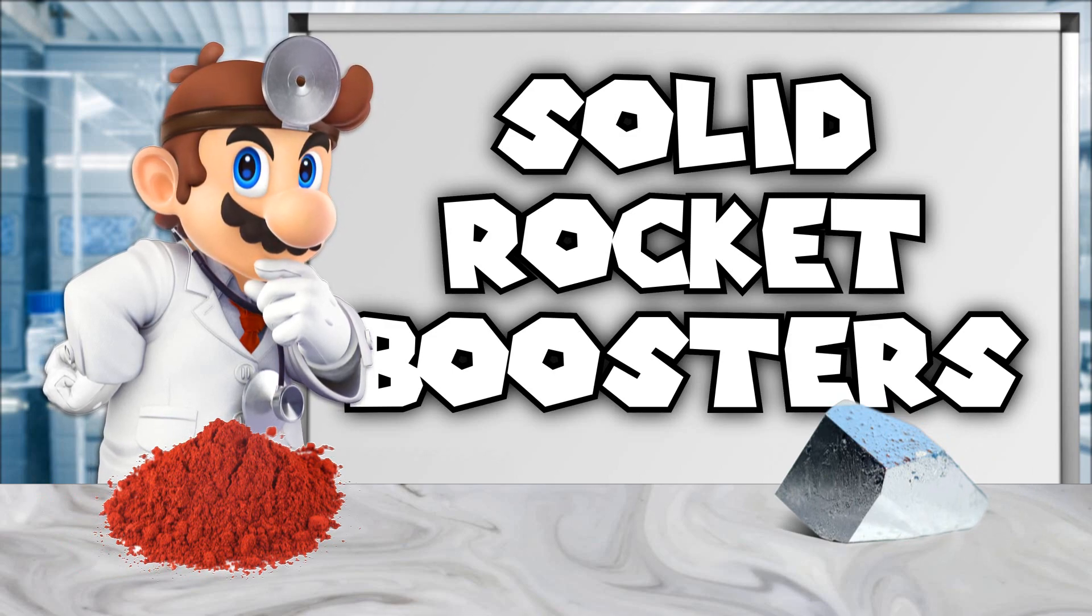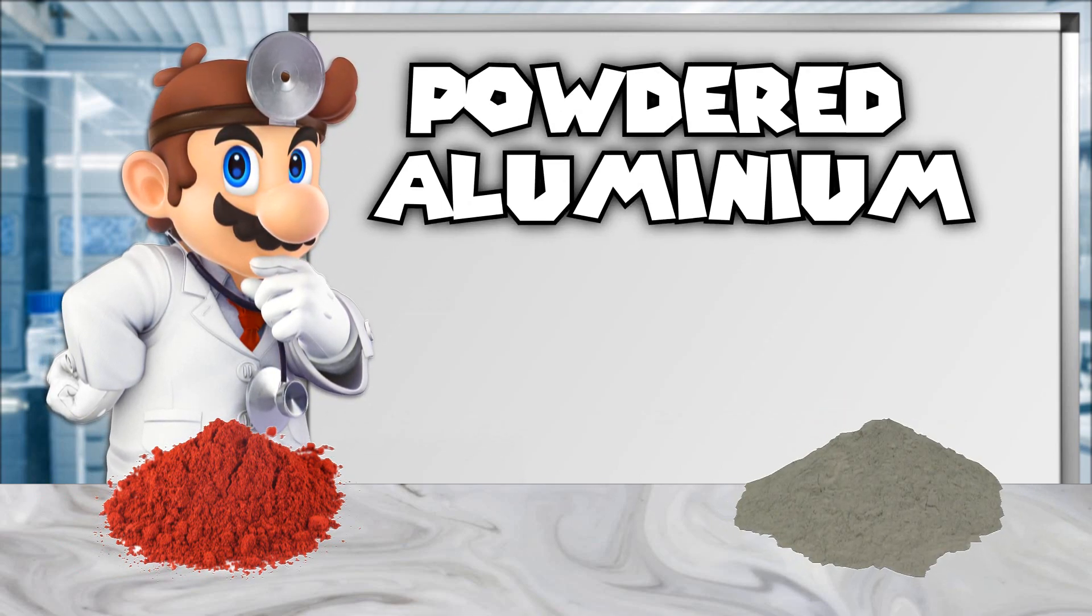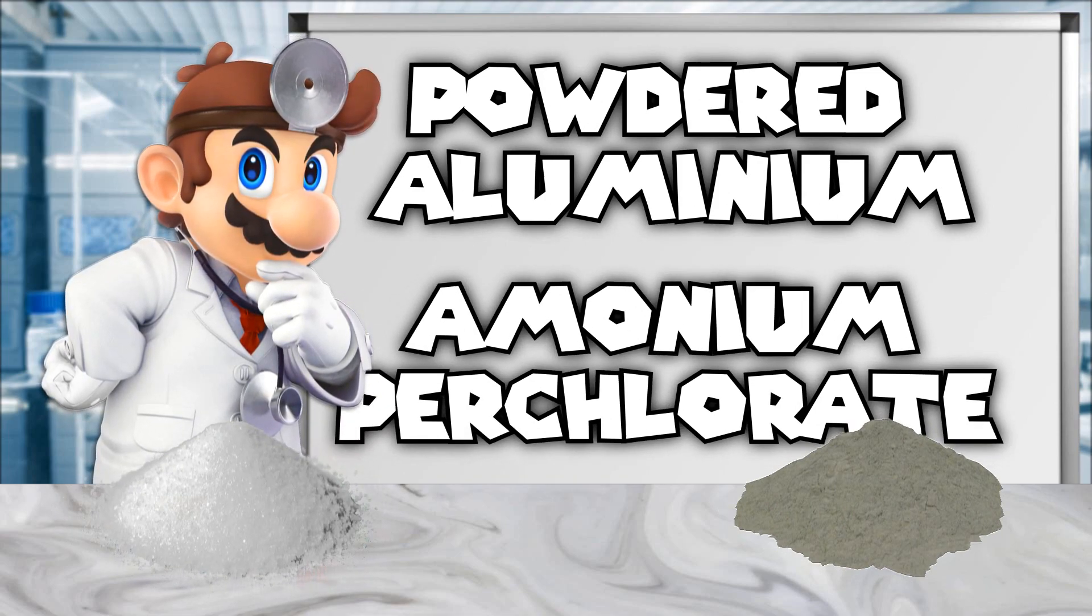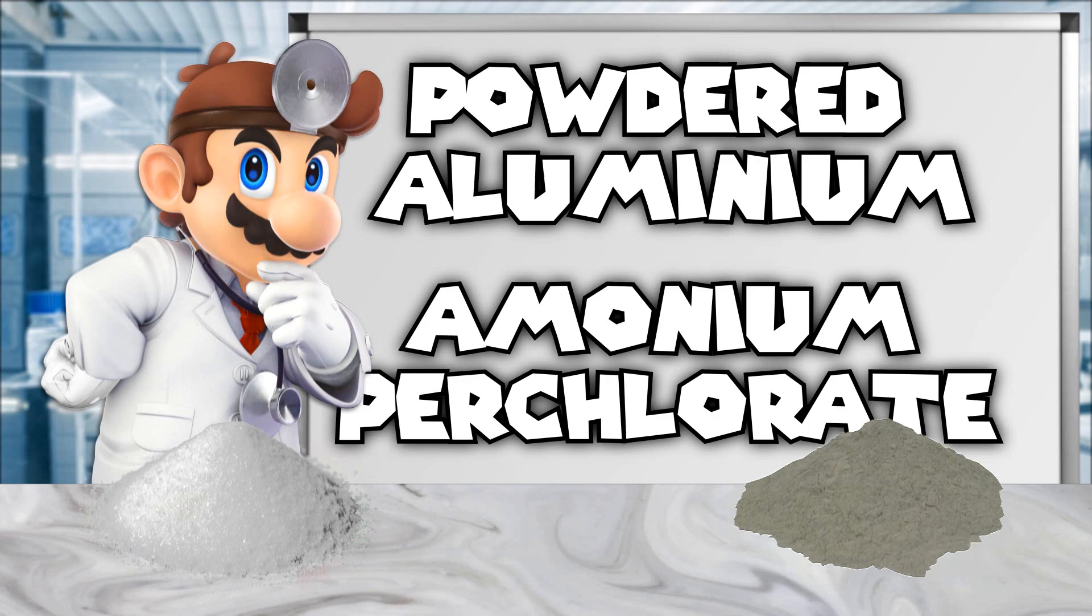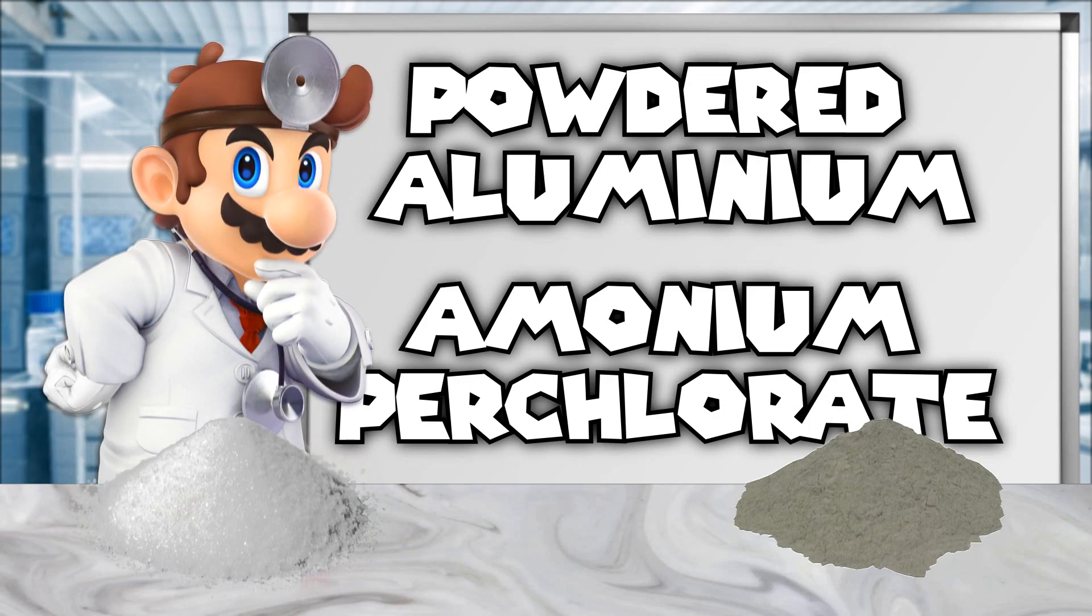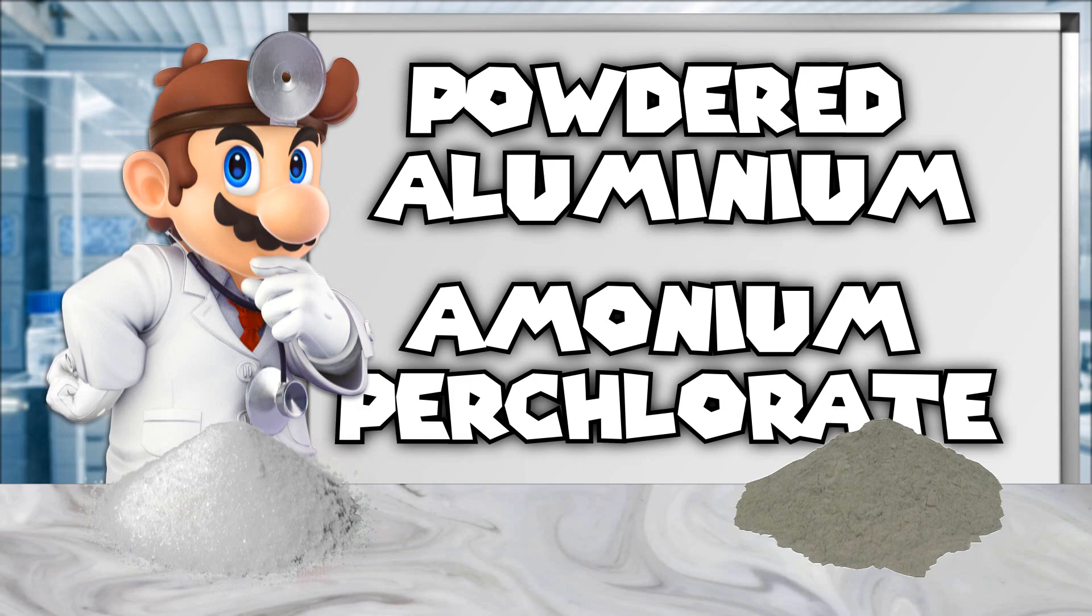Solid rocket boosters feature powdered aluminum as the fuel and a chemical called ammonium perchlorate as the oxidizer. Whilst most rocket fuels are liquids at room temperature, ammonium perchlorate is a solid powder, which makes it ideal for our fireballs.